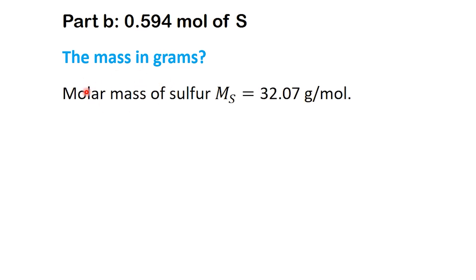First, let's find the molar mass of sulfur. From the periodic table, the molar mass of sulfur equals 32.07 grams per mole. This gives us the conversion factor we'll use: 1 mole of sulfur equals 32.07 grams.